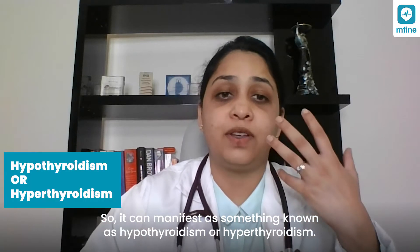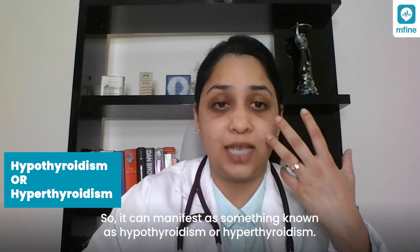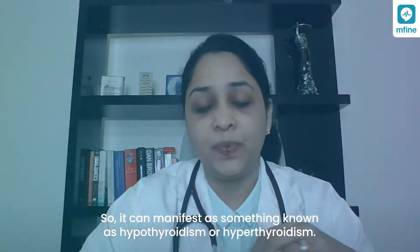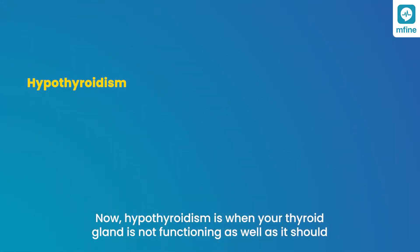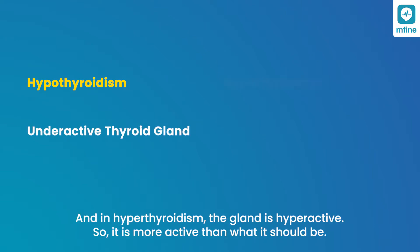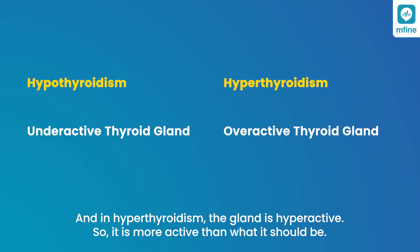Thyroid-related disorders can manifest in different ways — either as hypothyroidism or hyperthyroidism. Hypothyroidism means the thyroid gland is not functioning as well as it should — it is functioning lower than normal, or is an underactive gland. In hyperthyroidism, the gland is hyperactive — more active than it should be.